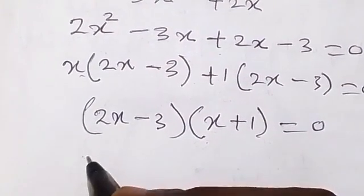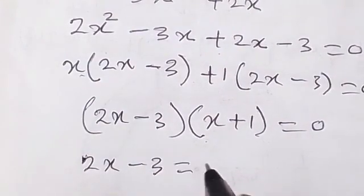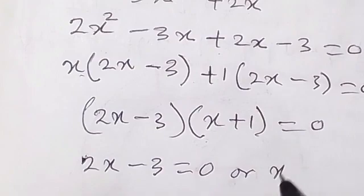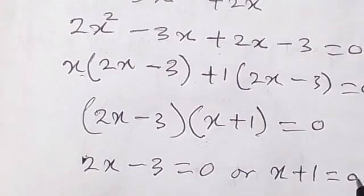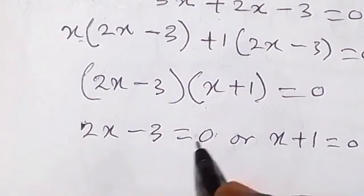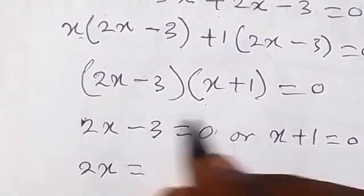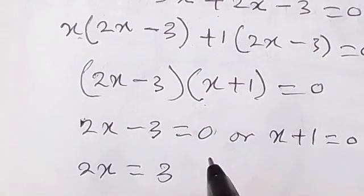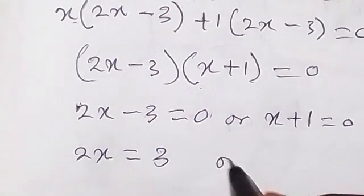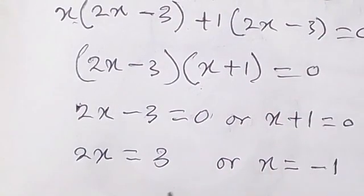Which one we don't know. Therefore we say is it that 2x minus 3 equals to 0 or x plus 1 equals to 0. By the time we solve this, when this one comes here now we have 2x equals to 3, because minus 3 comes here and becomes 3, or x equals to minus 1.